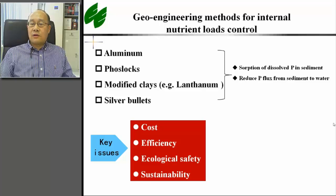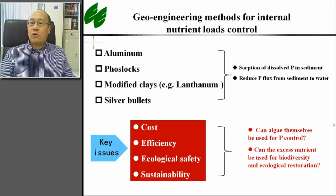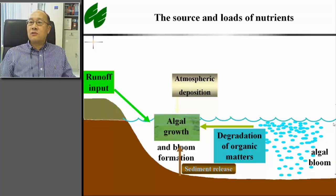To solve these bottleneck problems, breakthrough in technical principles is often essential. For instance, we can ask whether algae themselves can be used for P control. Can the excess nutrients in water be used for biodiversity and ecological restoration? There are two major sources of nutrients for lakes: external load, such as runoff and atmospheric deposition, and internal load from sediment and suspended particulate phosphorus, including algae cells.